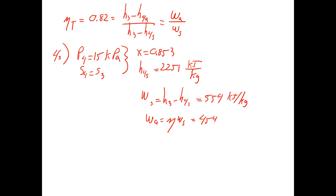The actual work coming out of the turbine would be the efficiency times the isentropic work: 454 kJ/kg. That's the specific work coming out of the turbine.